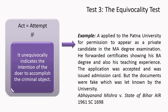Consider the example from Abhyanand Mishra vs State of Bihar. Here, the accused had forwarded certain certificates showing his qualifications and teaching experience in order to appear as a candidate in the MA degree examination. But the documents were fake, which was discovered by the university later on. The question was whether the act was attempt or preparation to cheating. The court held that all his acts and steps taken suggested how he intended to cheat the university, and it unequivocally indicated his intention to cheat. Applying the equivocality test, it held that it would fall under attempt to cheating and not preparation to cheating.